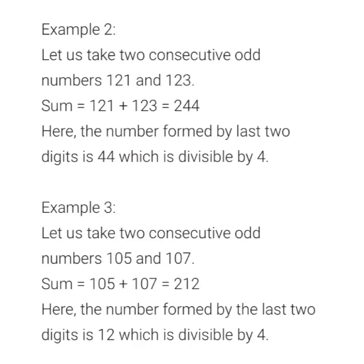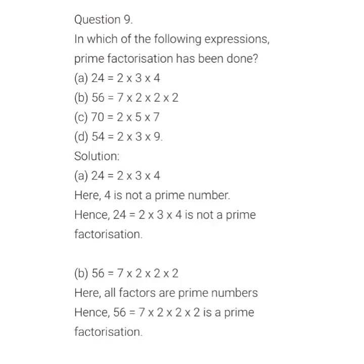Let us have one more example. We have two consecutive odd numbers 105 and 107. The sum of 105 and 107 is 212, and 12 is divisible by 4. Hence 212 is divisible by 4. With these three examples we can conclude that the sum of two consecutive odd numbers is divisible by 4. Next question: in which of the following expressions has prime factorization been done?